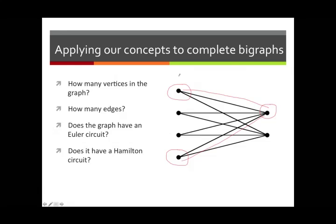If we begin at vertex number one on the left, then vertex two will be on the right, vertex three back on the left, and so on — always alternating sides. If I were trying to make a circuit, I'd reach my fourth vertex, then take a fifth one, and then I'm stuck. I've run out of vertices on the right while I still have vertices on the left. So in fact, this graph does not have a Hamilton circuit.